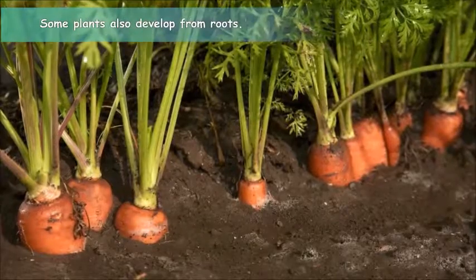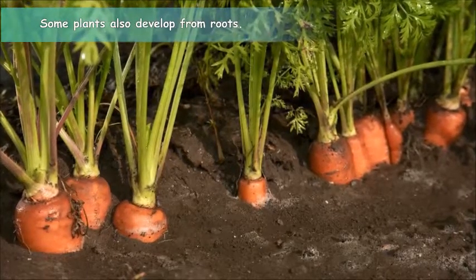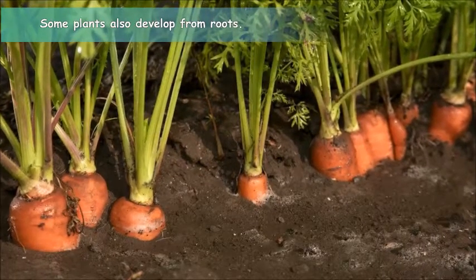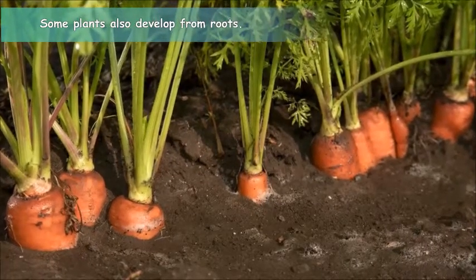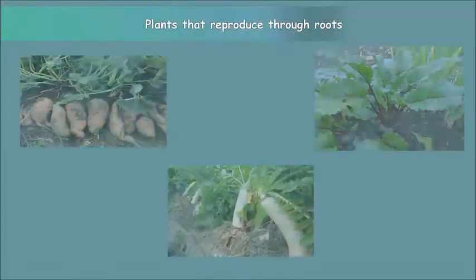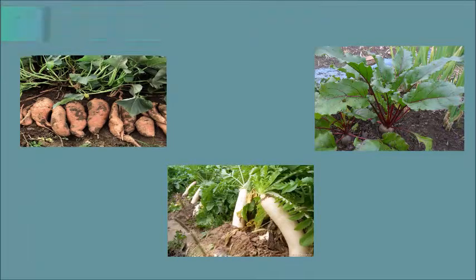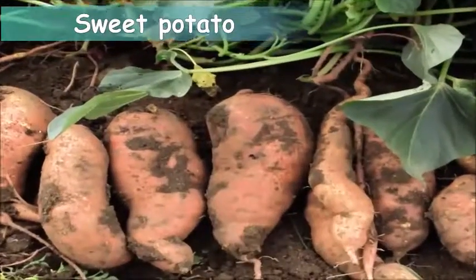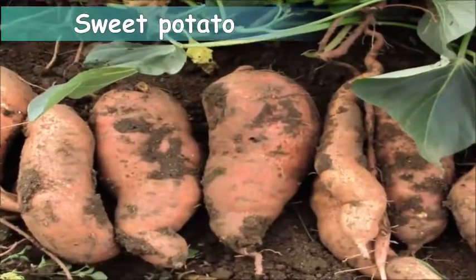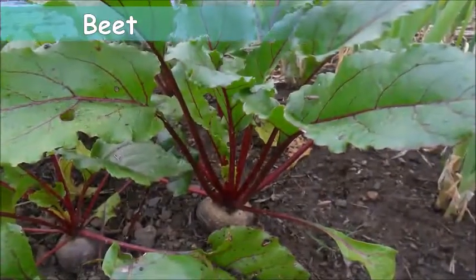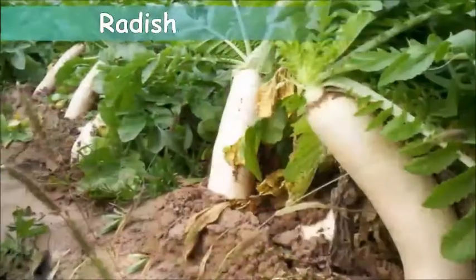Now let's see the reproduction in plants through roots. A carrot develops from its roots. Other examples of plants that reproduce through roots are sweet potato, beet, and radish.